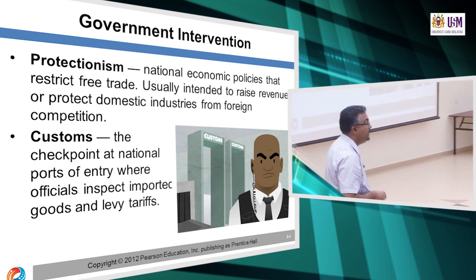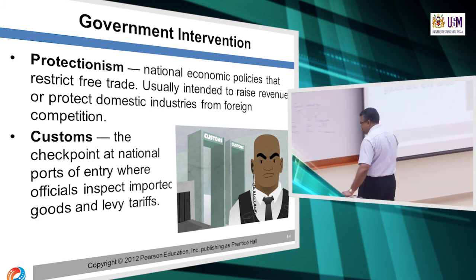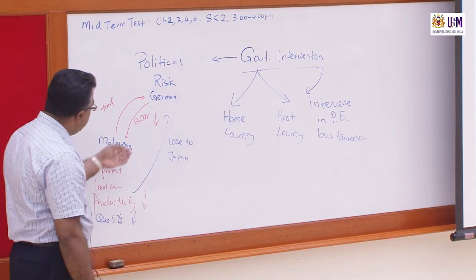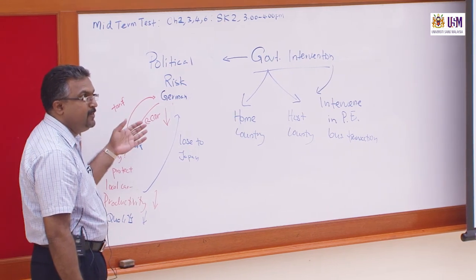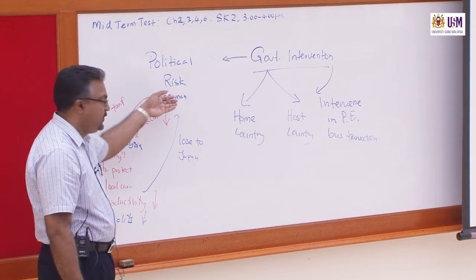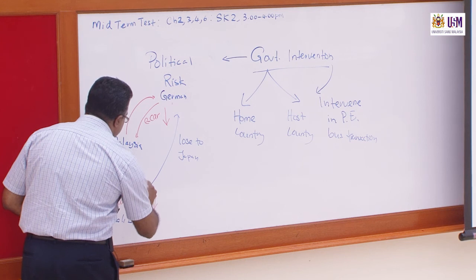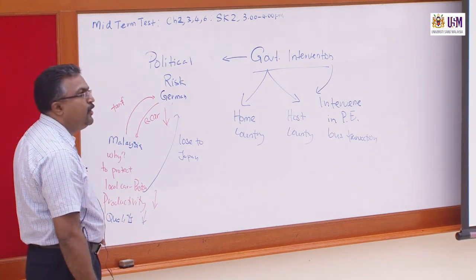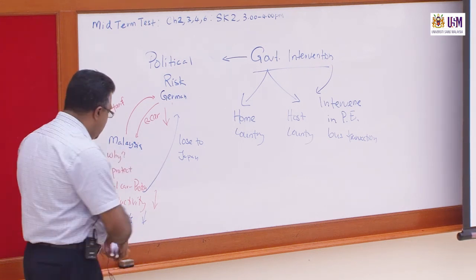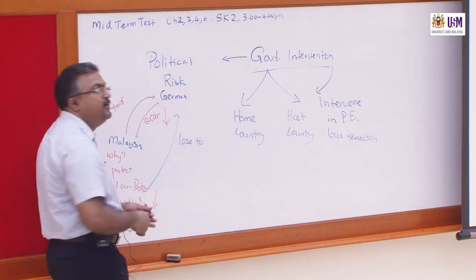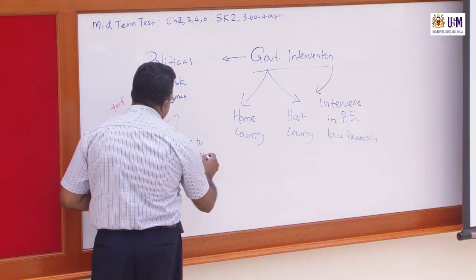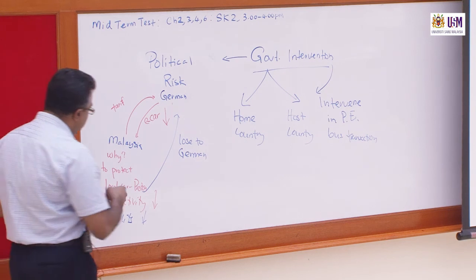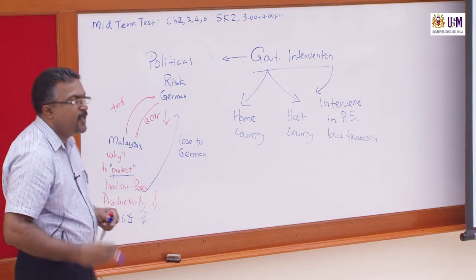Let's change the scenario. Germany exports quality cars to Malaysia. Malaysia imposes a tariff on Germany to protect our local car, Proton. What is happening to Proton now? Productivity drops, quality drops. At the end, they lose to Germany in the long run. Why are they doing that? Protectionism — to protect.